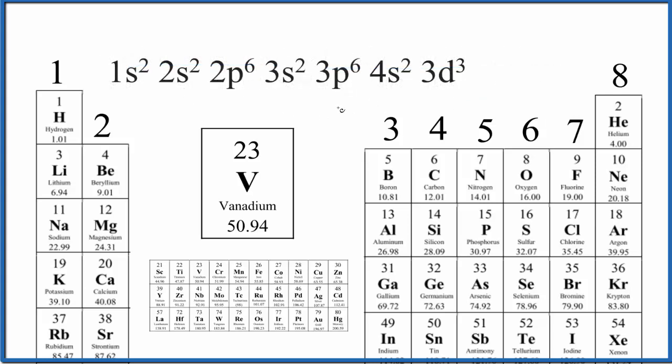Here's the electron configuration for vanadium. And if we look right here, we have 1018. That's this argon right here. So the noble gas core would be right here. And the 4s² 3d³, that would be outside the noble gas core.